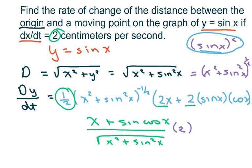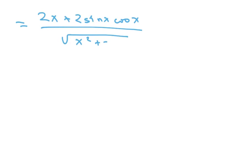Our answer is going to be 2x plus 2 sine of x. You're just distributing here. You're taking your 2 and multiplying by both of these. So your final answer is going to be 2x plus 2 sine of x cosine of x over the square root of x squared plus sine squared x, and that's all.